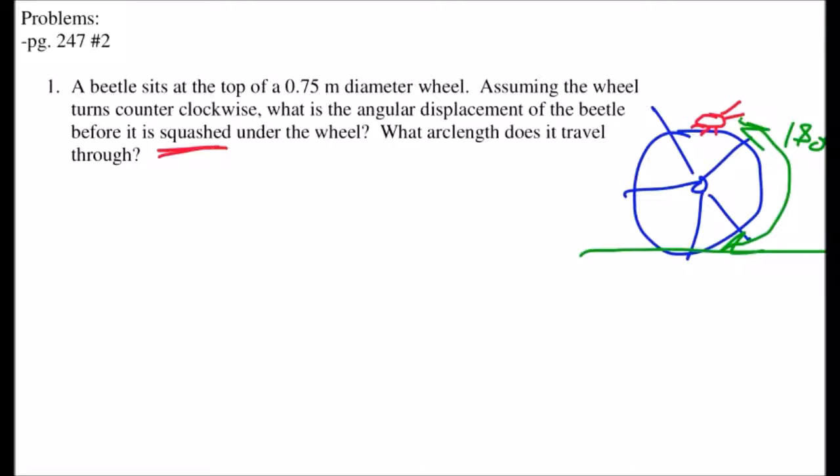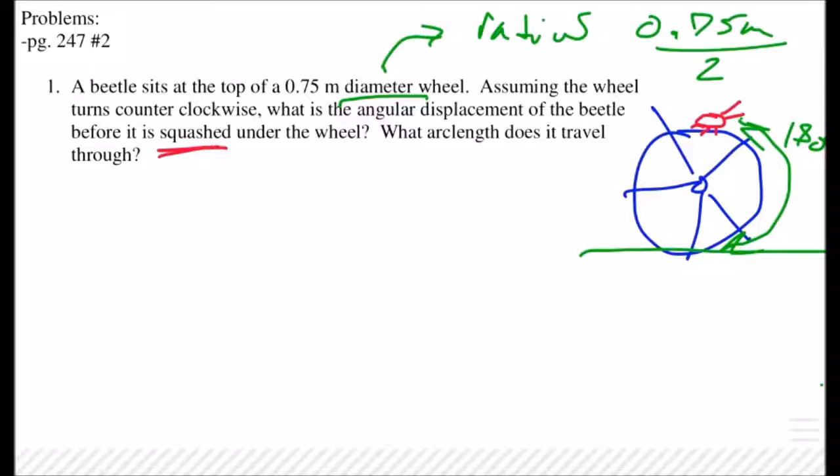The next thing here is that it says diameter. Anytime that you see diameter I need you to change it to radius. You need to resolve for whatever this would be as a radius. So how are you going to do that? Very good, so we're going to say 0.75 meters divided by 2 and what are we going to come up with for our radius.